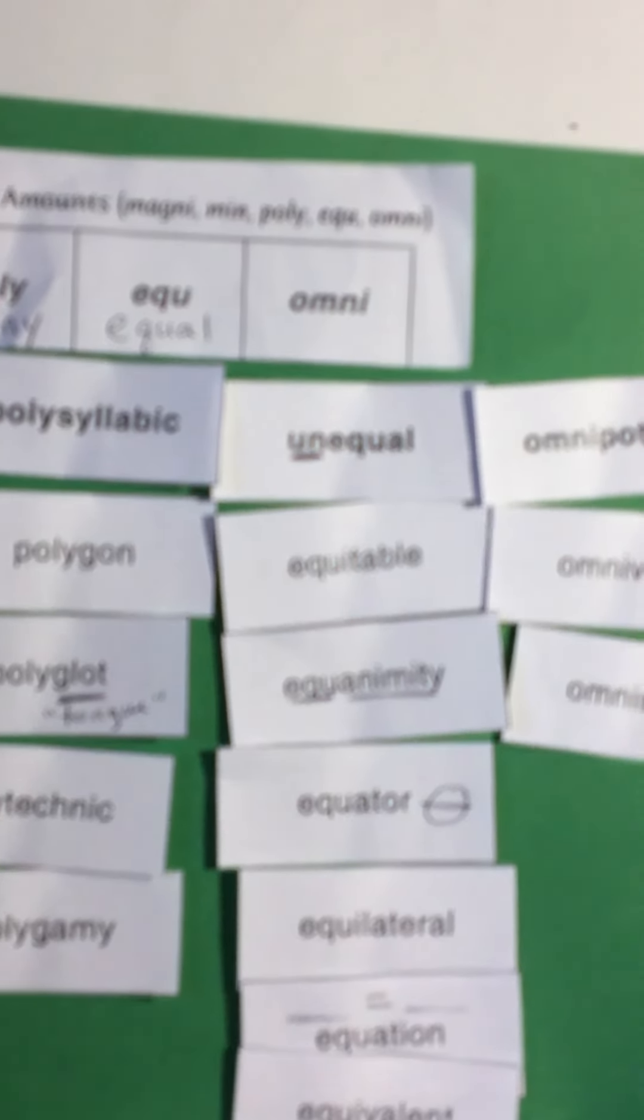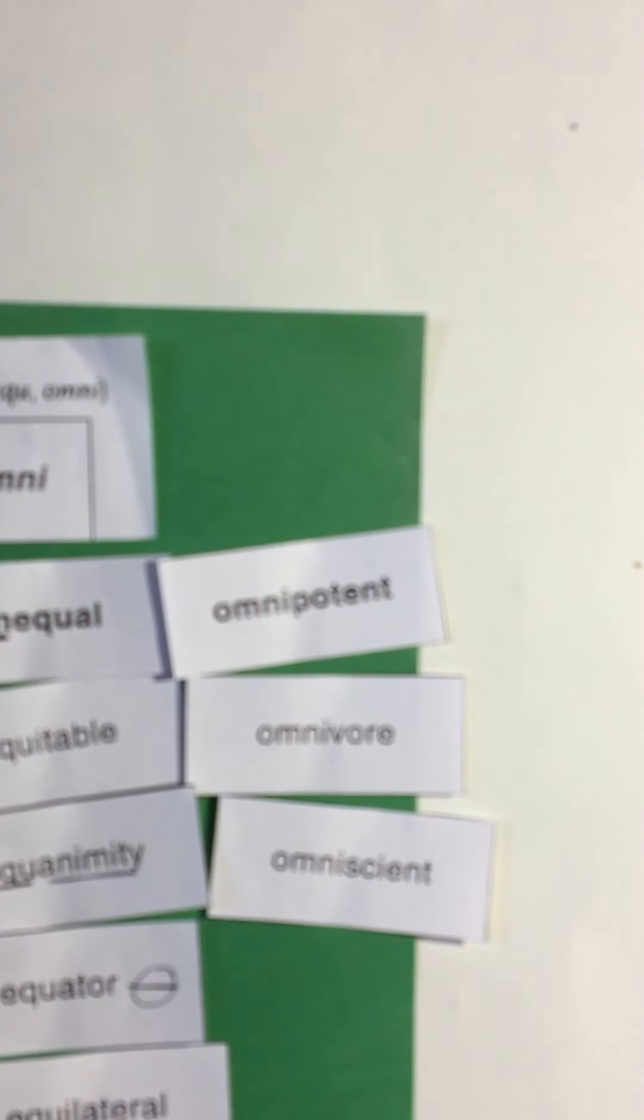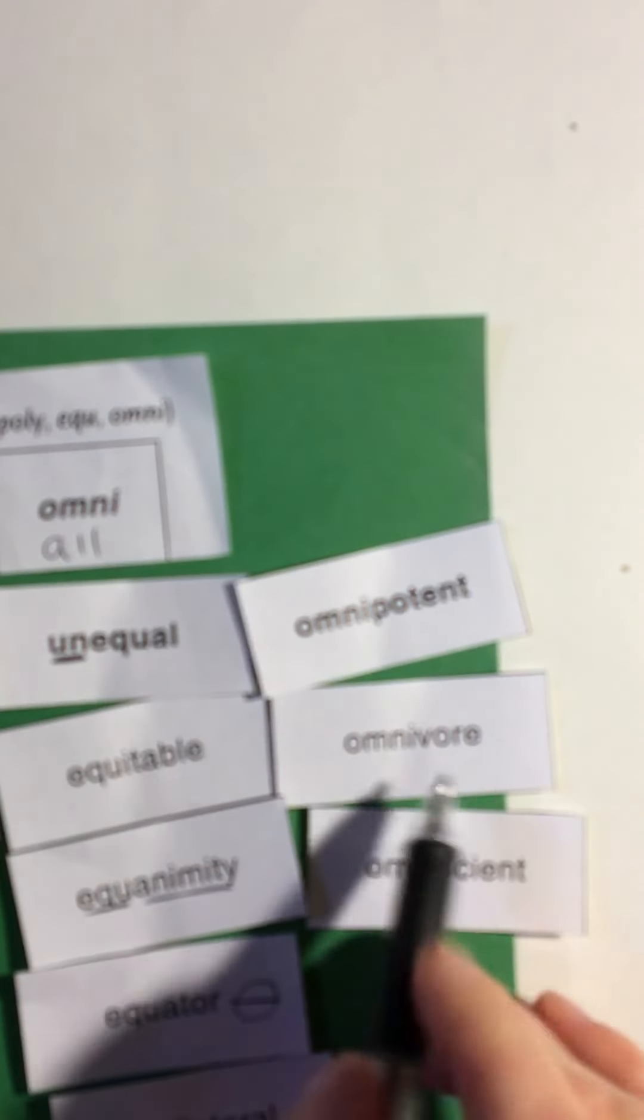Alright, and omni. This reminds me of one of the points of views, omniscient, when you are all knowing. So omni means all. You remember what a herbivore and a carnivore is? Well here's your omnivore that eats all different kinds of animals and plants.